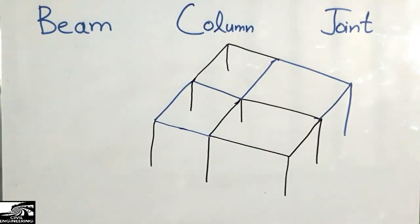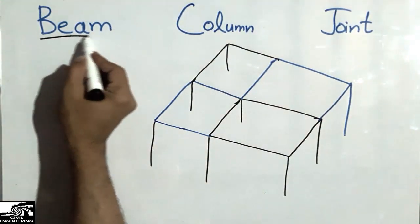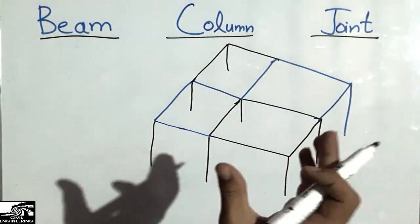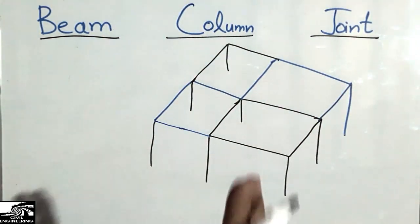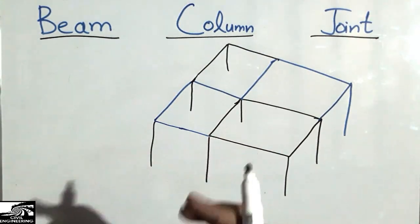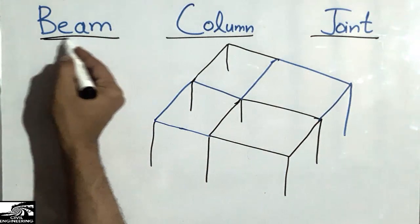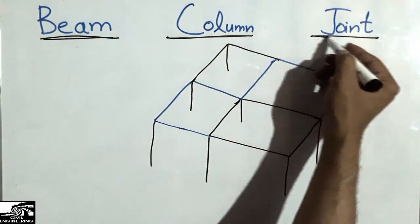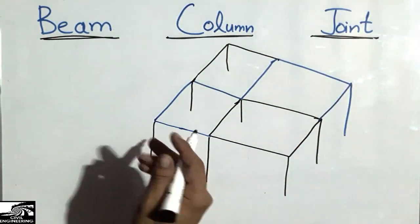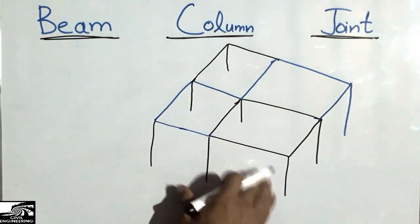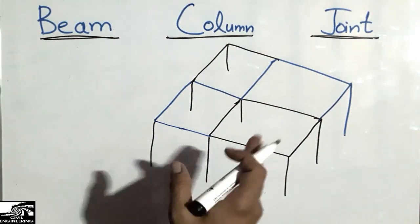Hello guys, welcome to the Civil Engineering YouTube channel. Please subscribe to our channel for more civil engineering updates. Today we are going to discuss the beam-column joint. This is a very important joint in every RC structure. You will get to know about this joint — what is the beam-column joint, how it should be designed, and there are some important points which I will explain in this lecture.